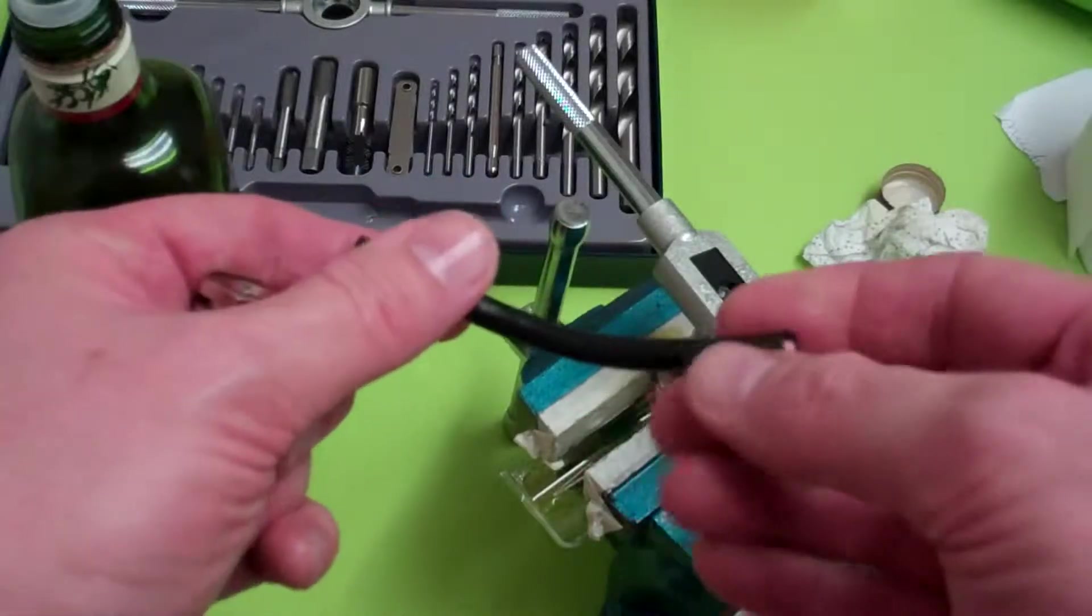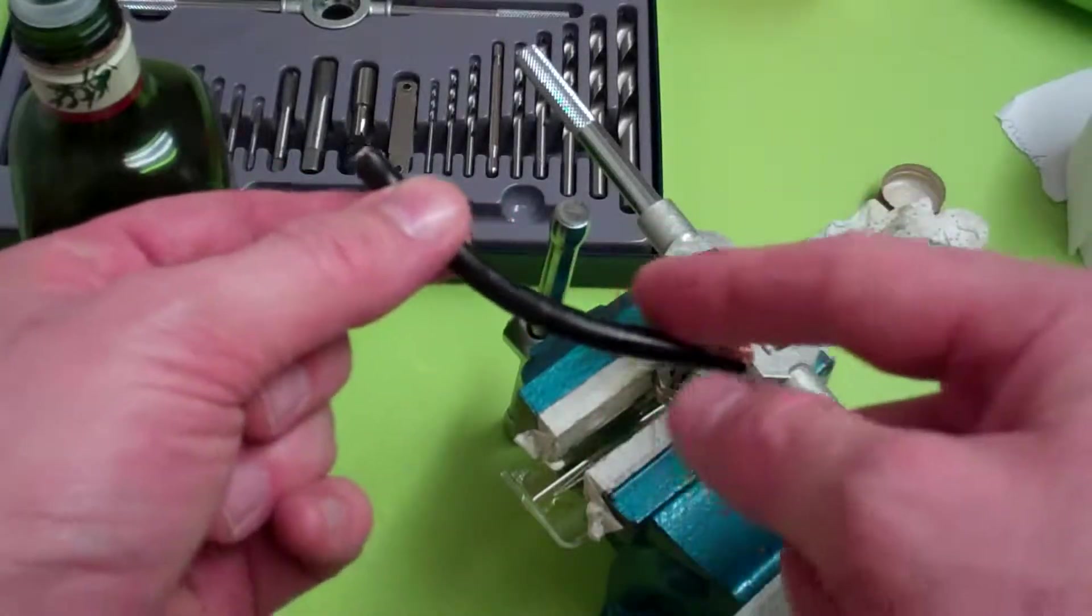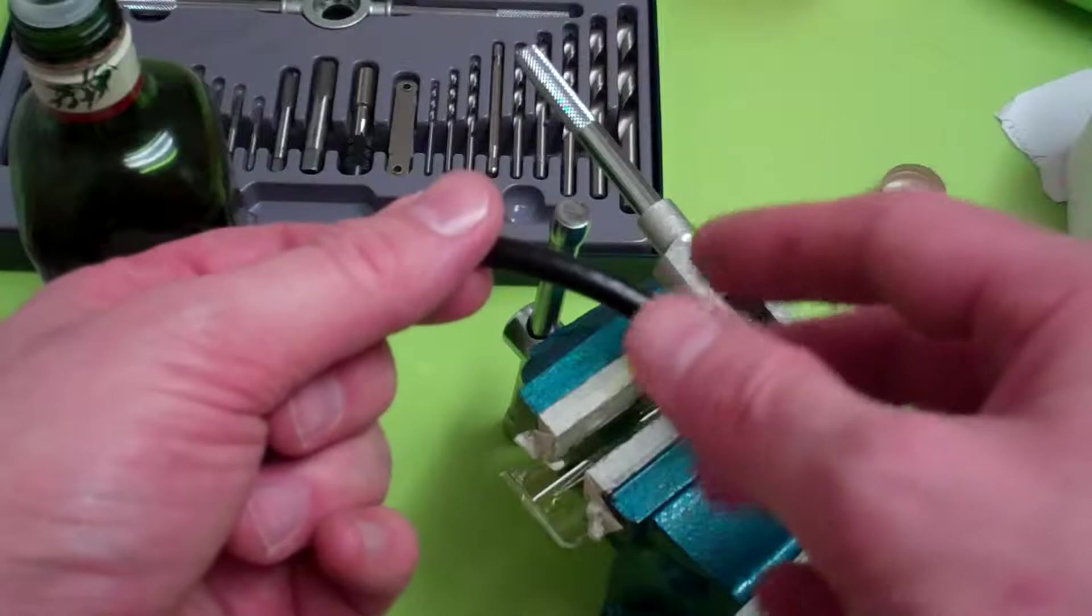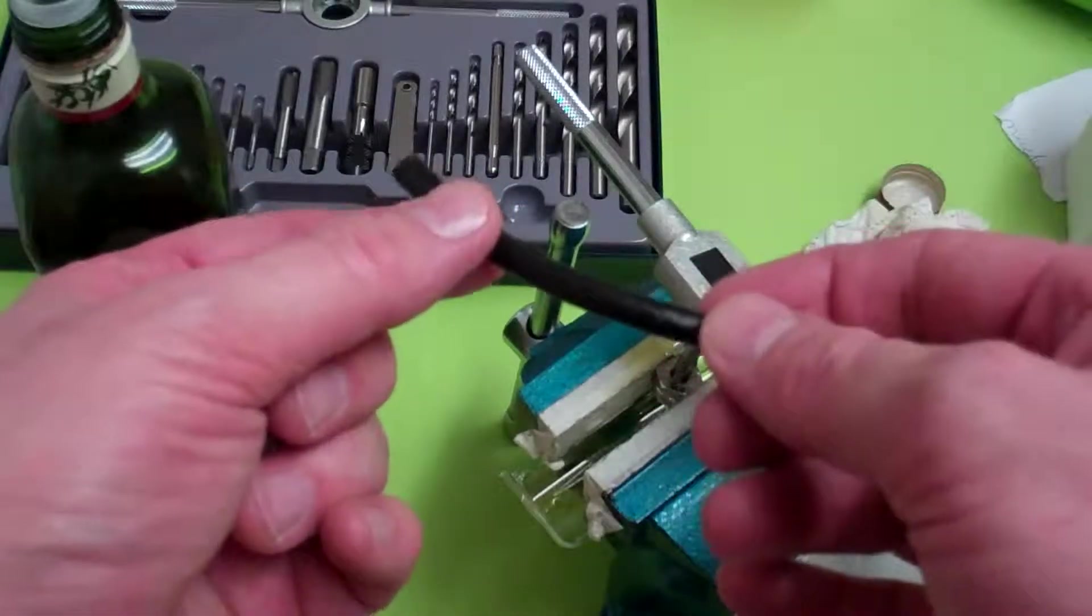In this case, this is a 75-ohm coax. It's got an outer diameter of about 6 to 6.5 millimeters, according to my calipers.